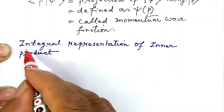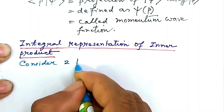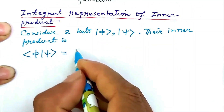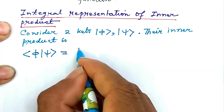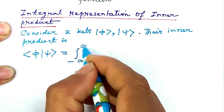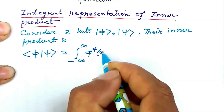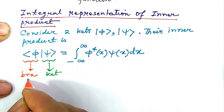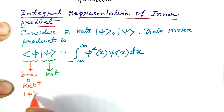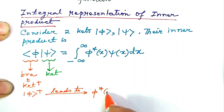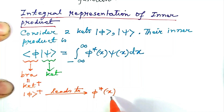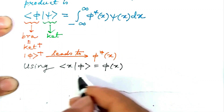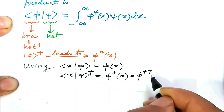It is time to describe what is meant by the integral representation of inner product. Consider two kets, ket φ and ket ψ; their inner product is bra φ ket ψ, and this is by definition represented by an integral: the integration from x = −∞ to +∞ of φ*(x)·ψ(x) dx. Here, bra φ is ket φ dagger — this leads to φ* within the integrand. So φ* appears because on the left-hand side we find bra φ, using the inner product bra x ket φ written as φ(x) and its dagger as φ*(x).